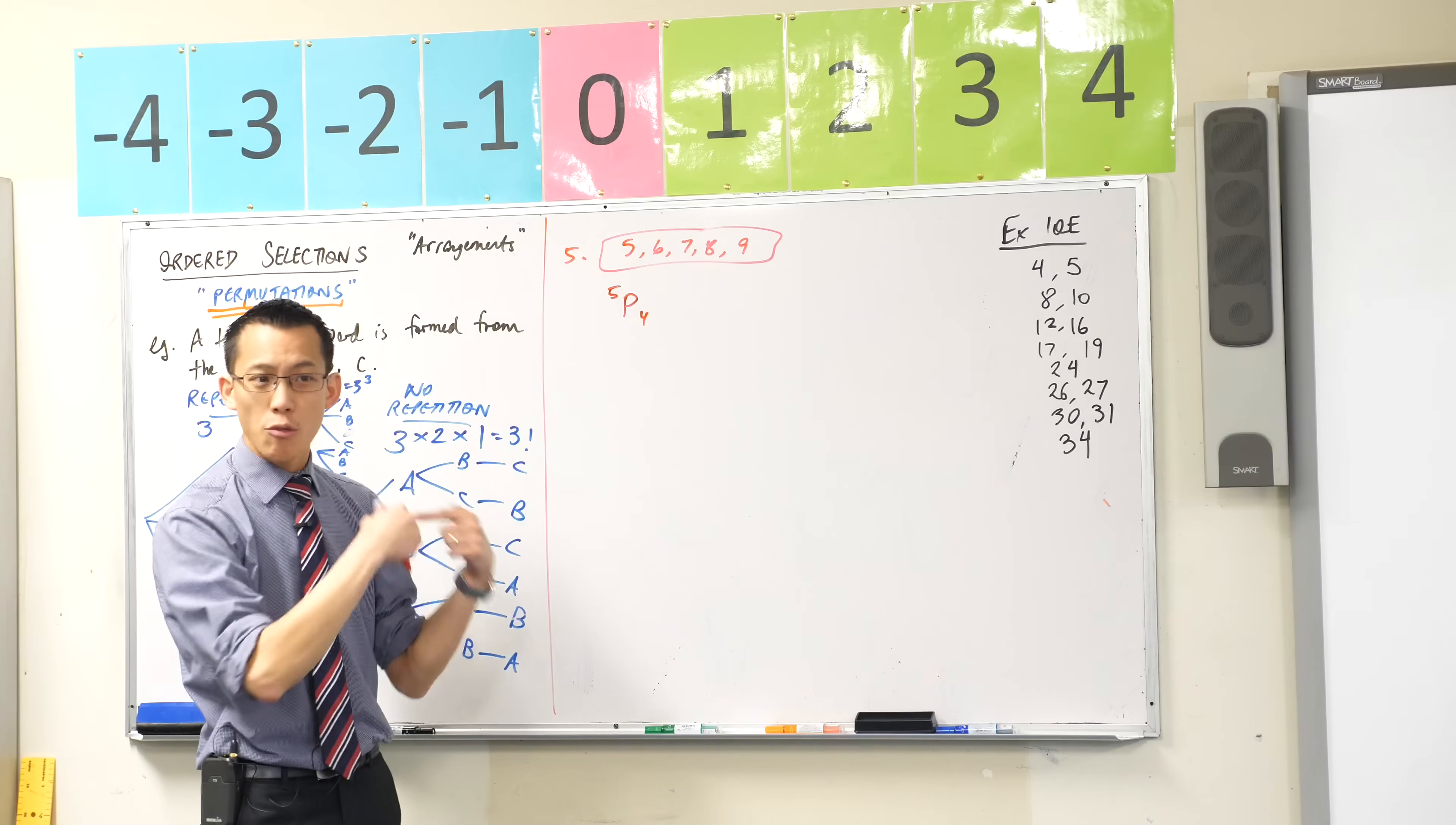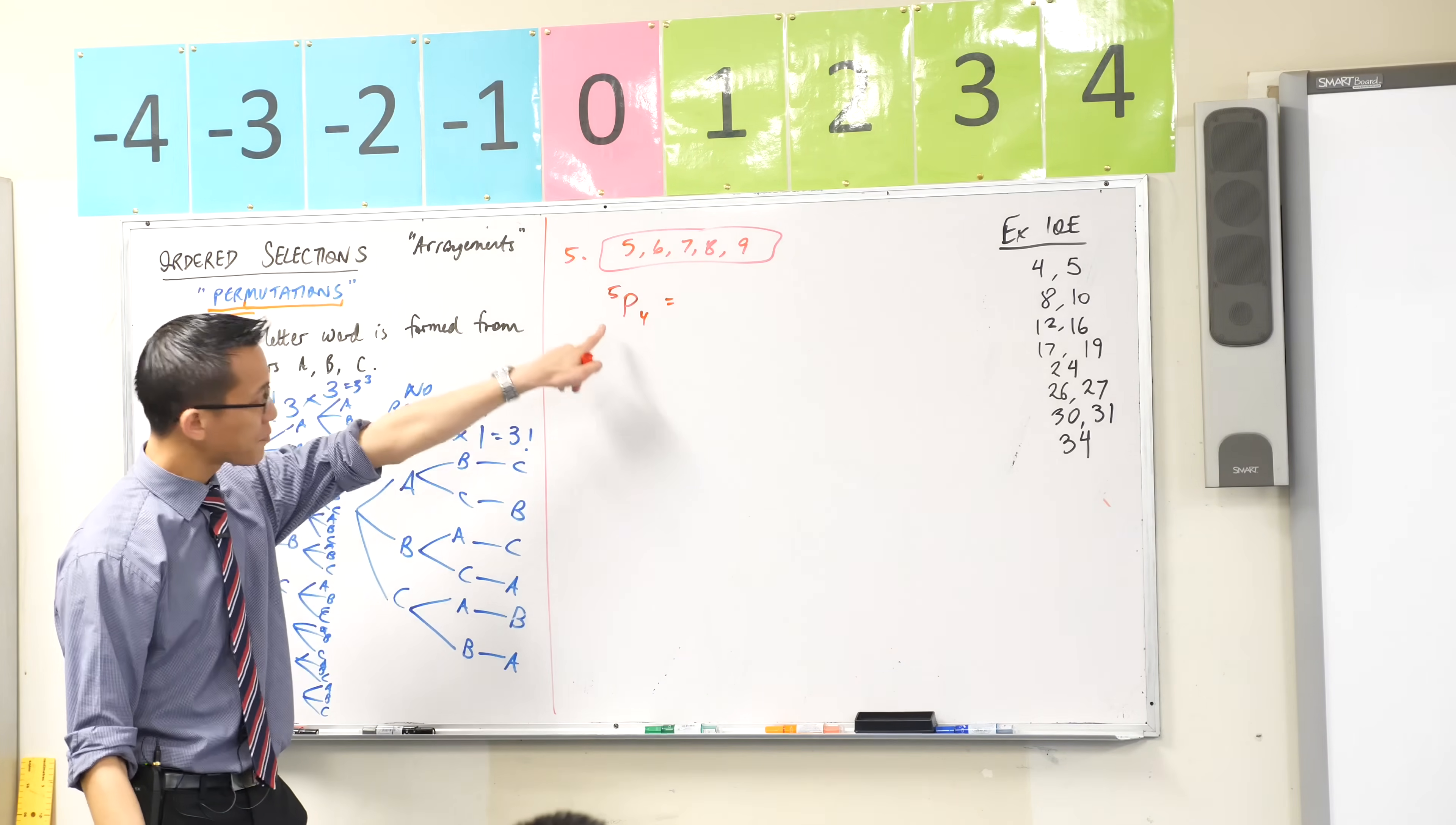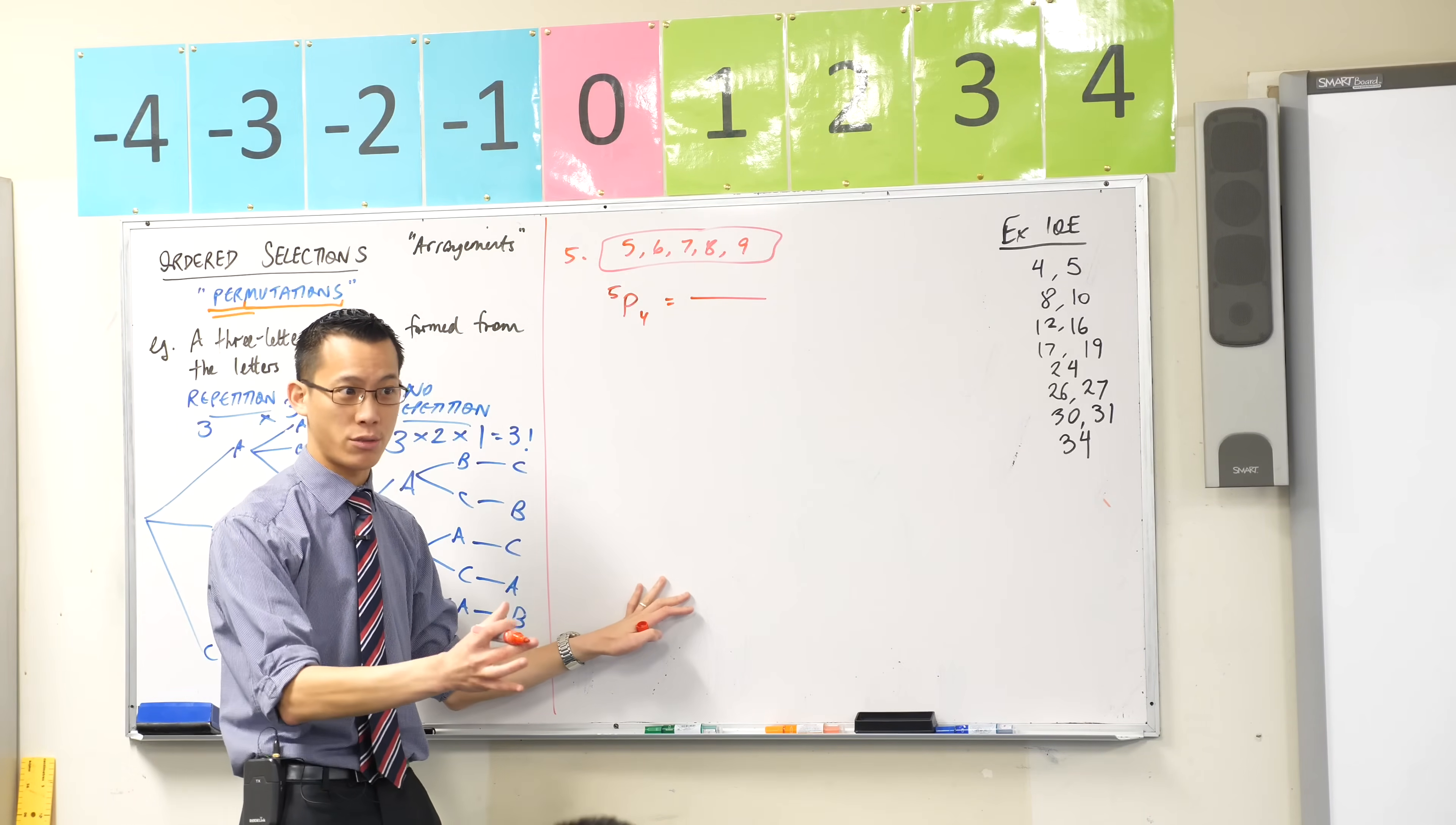Now I want to cycle back to the definition because you could just go to your calculator, you could just punch that number straight in and you would get an answer. But I actually want to think about this just a little bit further. Let's think about this in terms of the factorial definition of 5P4. If I say this is a fraction, what's on the numerator? What factorial will be there?